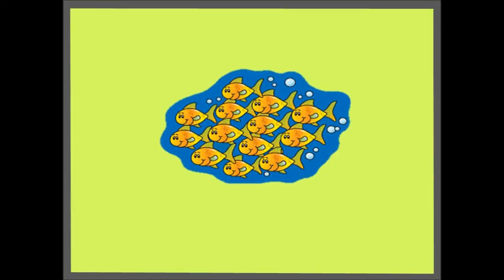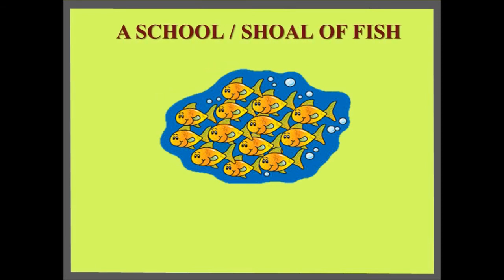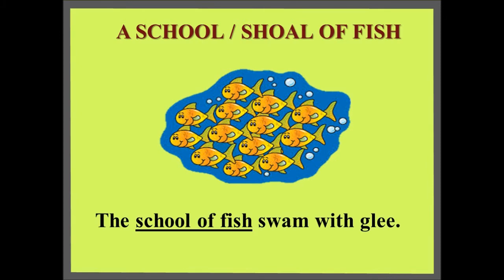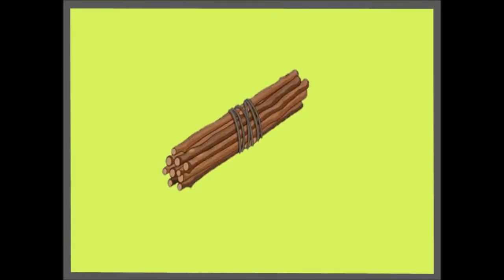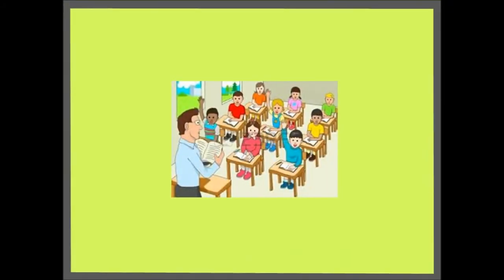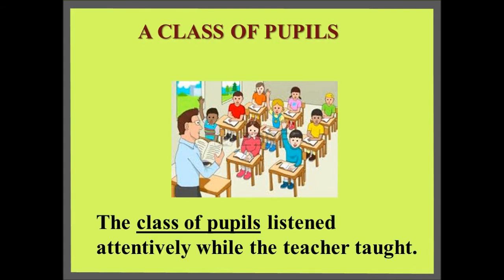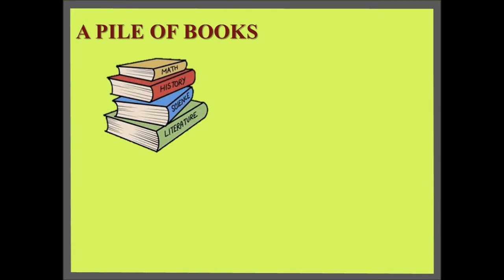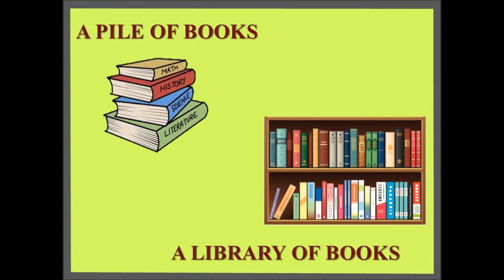A collection of fish is called a school or a shoal of fish. Sentence: The school of fish swam with glee. A collection of sticks is called a bundle of sticks. Sentence: The children brought a bundle of sticks from the woods. A collection of pupils or students is called a class. Sentence: The class of pupils listened attentively while the teacher taught. A collection of books is called a pile of books, when the books are arranged one on top of the other. When we keep the books in a library, it is called a library of books.